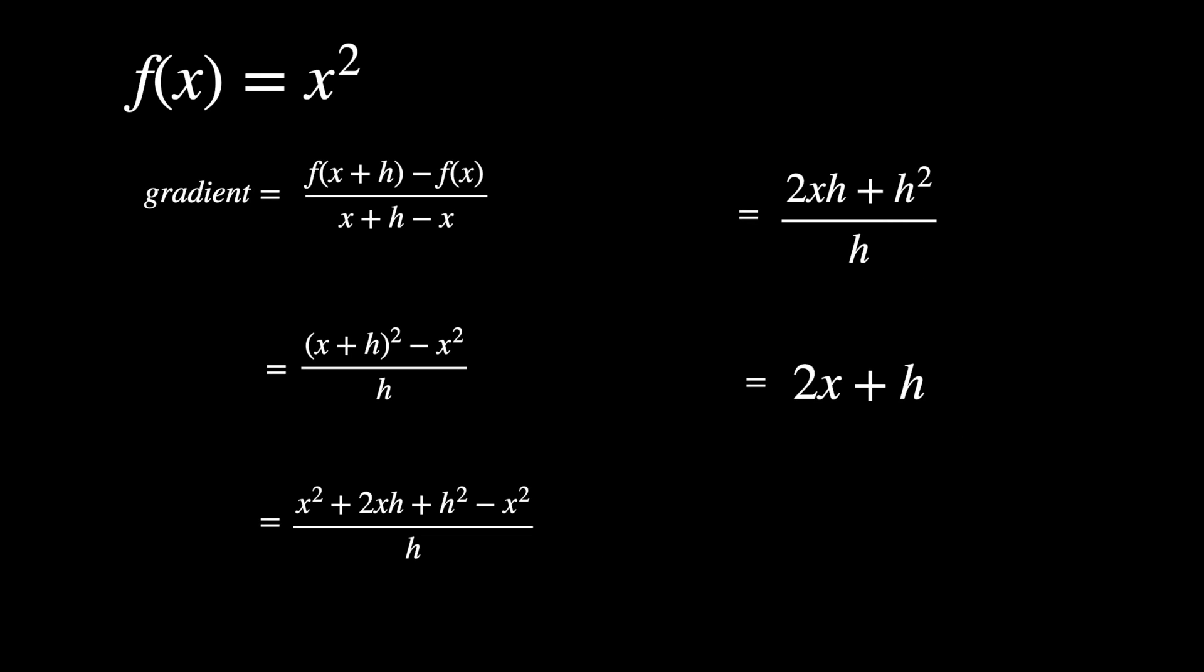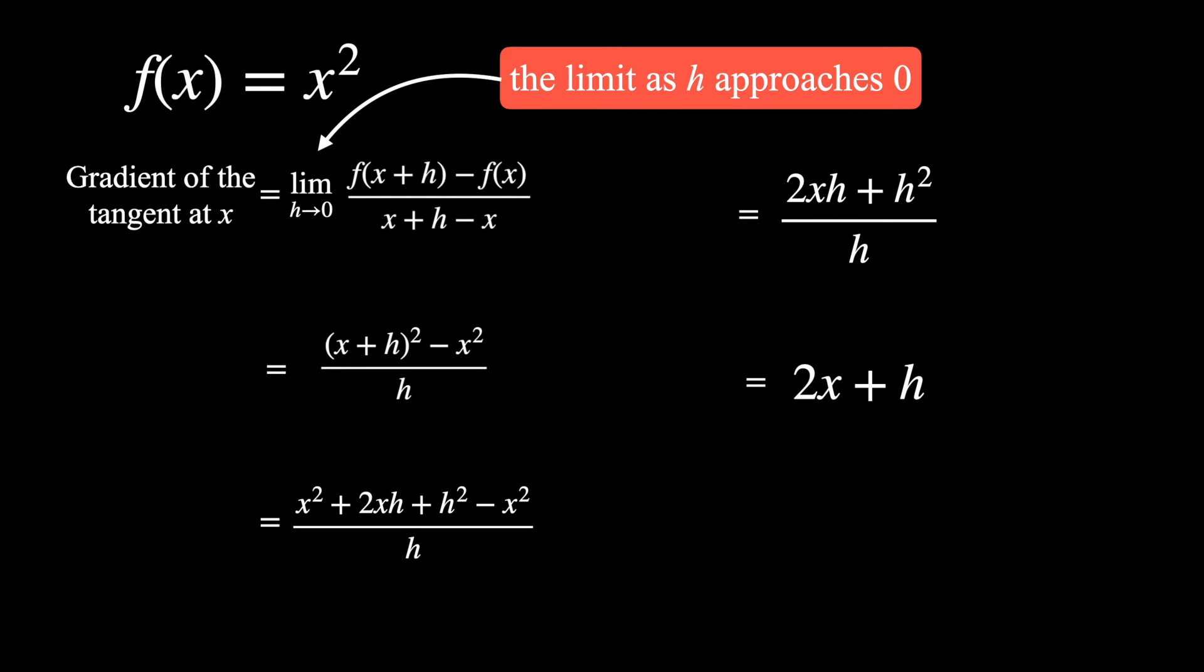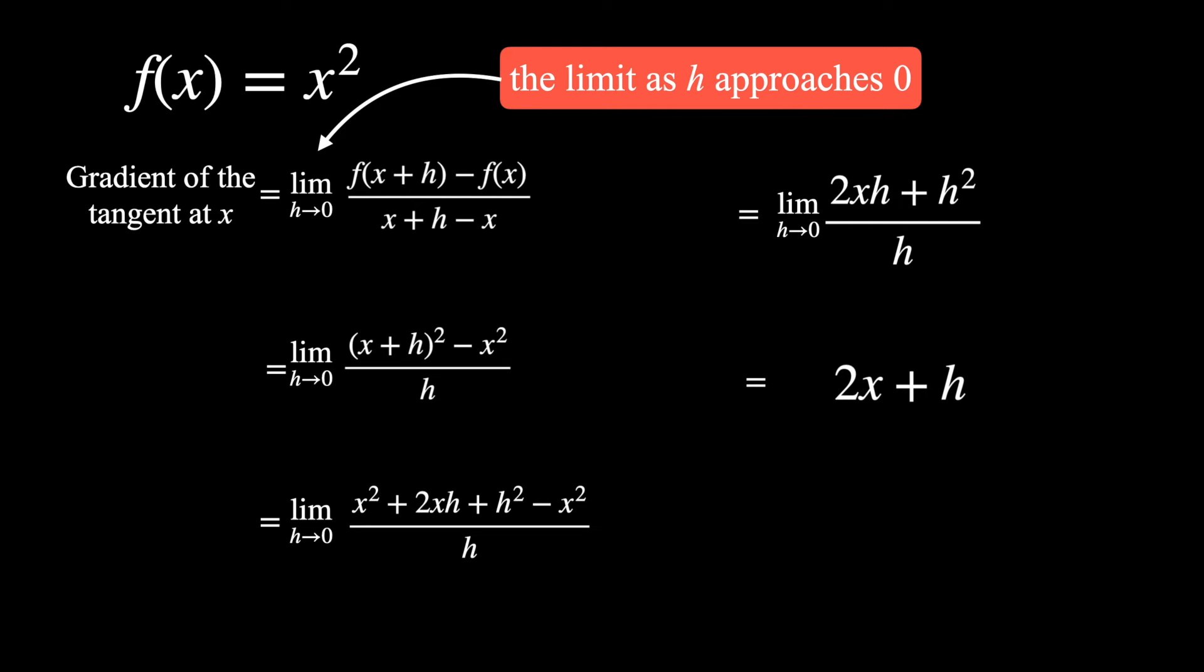So let's go back to our working out. We had the gradient equal to 2x plus h. Now we're going to introduce a little bit of new notation. The gradient of the tangent at x is equal to the limit as h approaches zero. So we add this to each line of working out, and now we can create this equality. And now we get to this final expression, and we ask, what is happening when h approaches zero? 2x plus h becomes 2x.